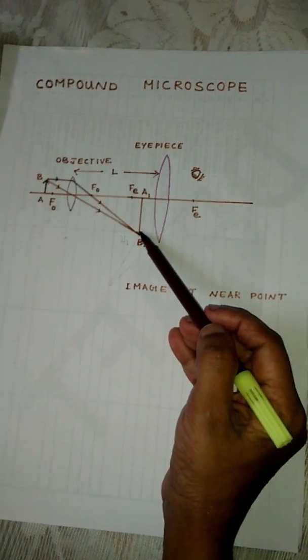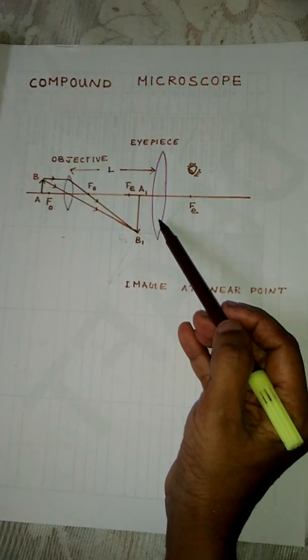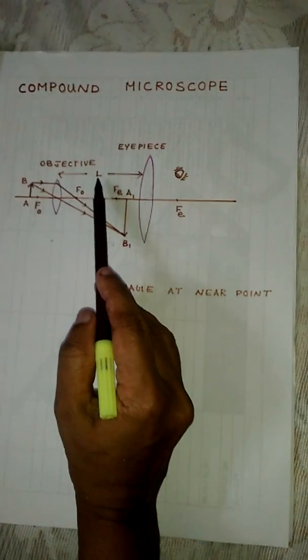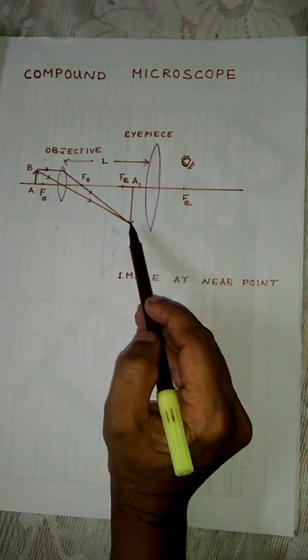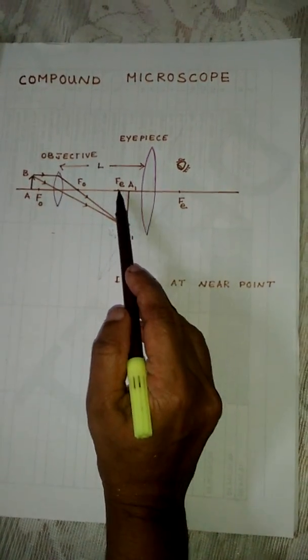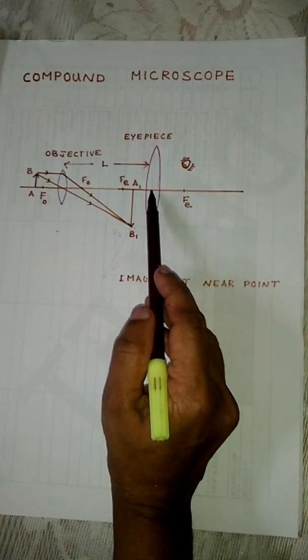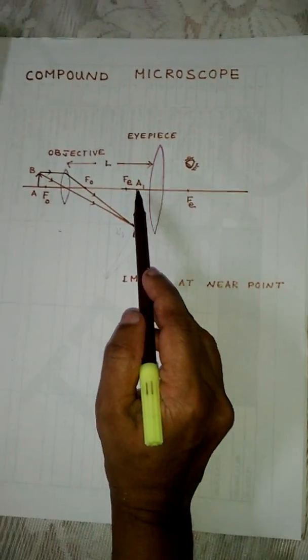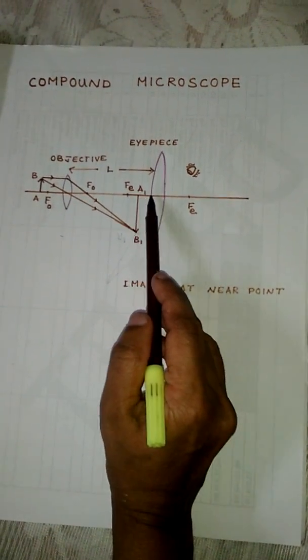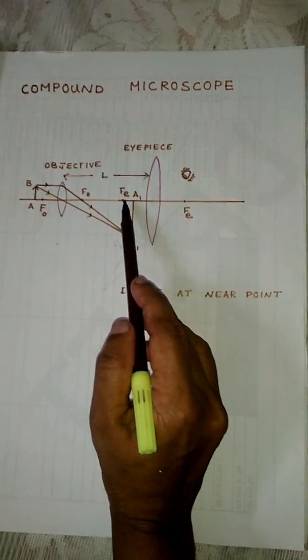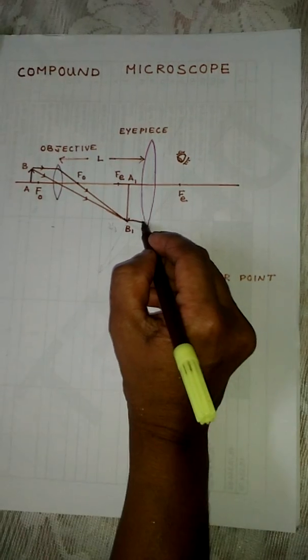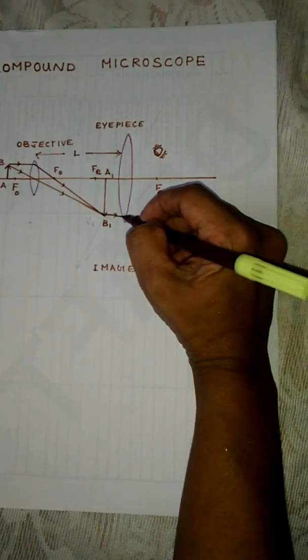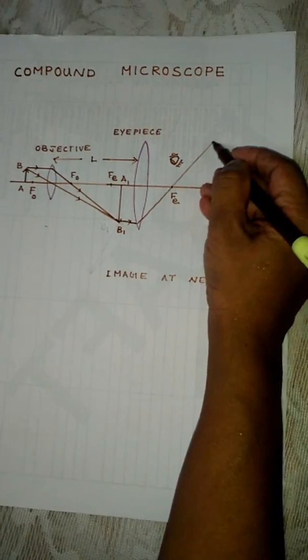This image acts as the object for the eyepiece. The tube length is adjusted such that the image A1B1 lies within the focus of the eyepiece. If the object lies between the optical center and the focus of a lens, the image will be virtual, or the refracted rays are diverging.